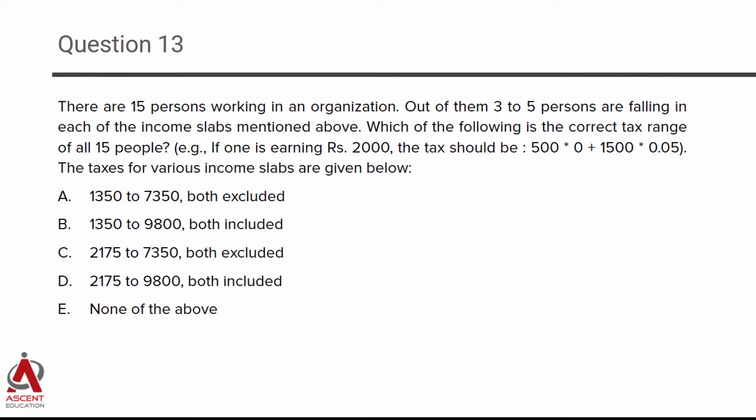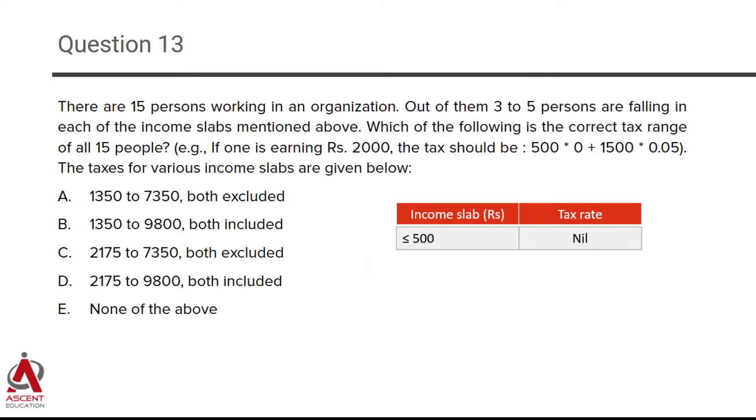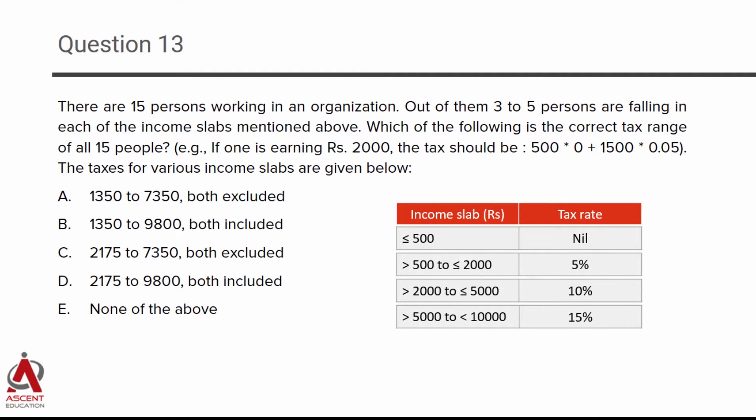There are 15 persons working in an organization. Out of them, 3 to 5 persons fall in each of the income slabs given in the table. The question asks: which of the following is the correct range of tax for all 15 people?